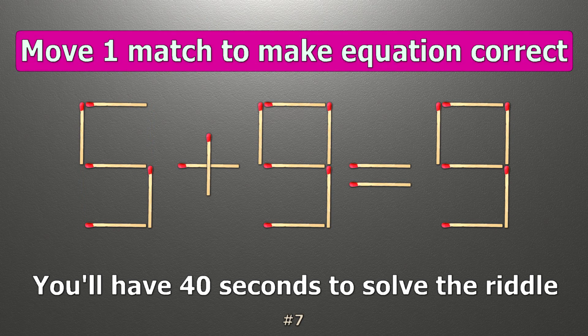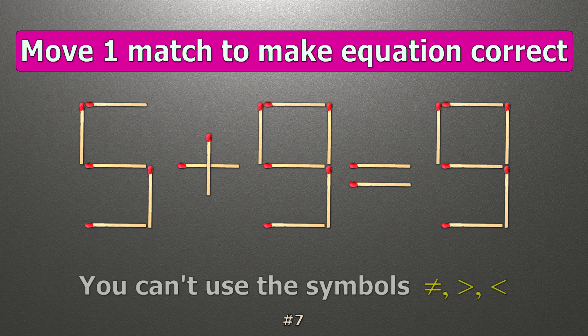We have the equality 5 plus 9 equals 9. Our equality is wrong. We need to move one match to make our equality correct.